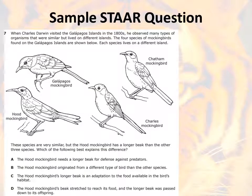Now, tying everything together, here is a sample STAAR question. A few years ago they actually asked this question: 'When Charles Darwin visited the Galapagos Islands in the 1800s, he observed many types of organisms that were similar but lived on different islands. The four species of mockingbirds found on the Galapagos Islands are shown below. Each species lives on a different island.' These species are very similar, but the hood mockingbird has a longer beak than the other three species. In your notes you have a spot for answer choices A, B, C, and D. Circle whether each is correct or incorrect, then back up your reasoning.